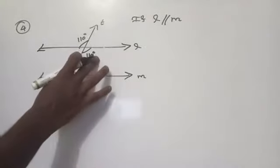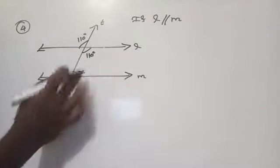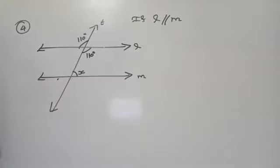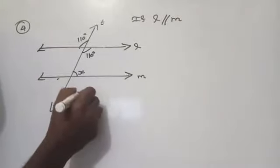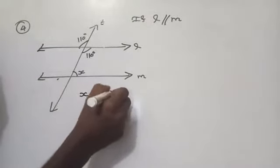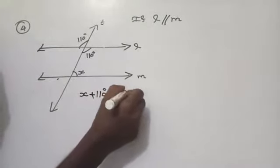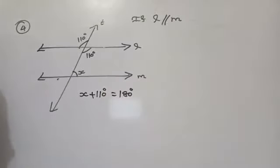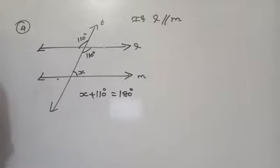Once you get the value of this angle, you can find the value of x by using what property? So, x plus 110 equals 180 degrees. What is the reason? Co-interior angles on the same side of the transversal are supplementary.